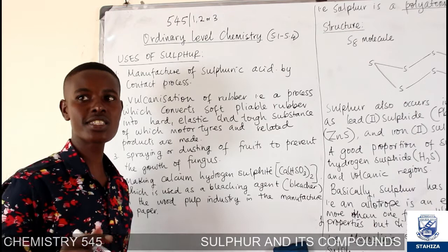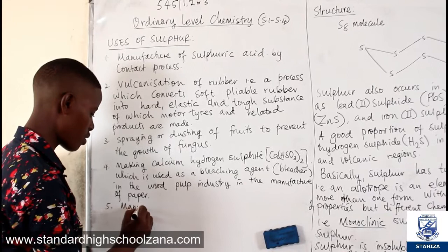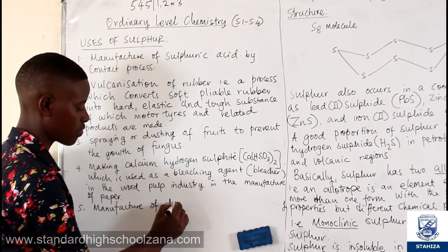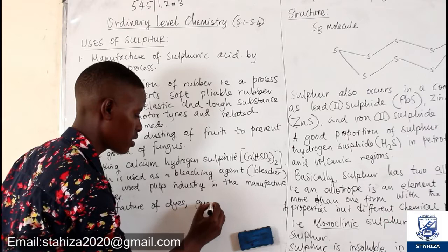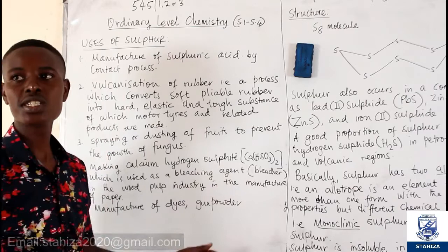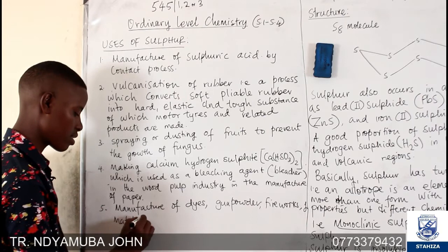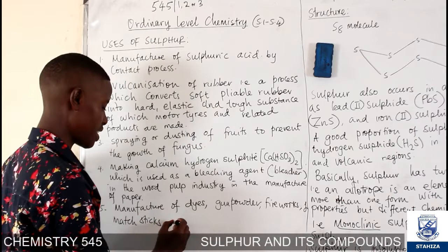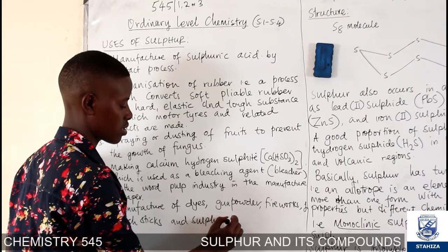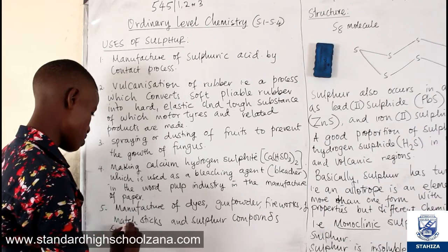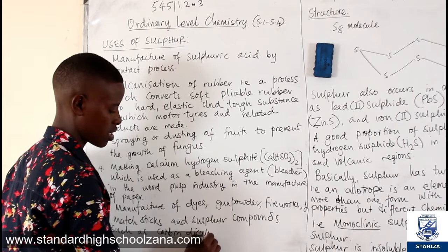Sulfur is also used in the manufacture of dyes. We also have gunpowder — very important in the field of security — as well as fireworks and matchsticks which we use at home. Sulfur compounds such as carbon disulfide are among the other important applications of sulfur.